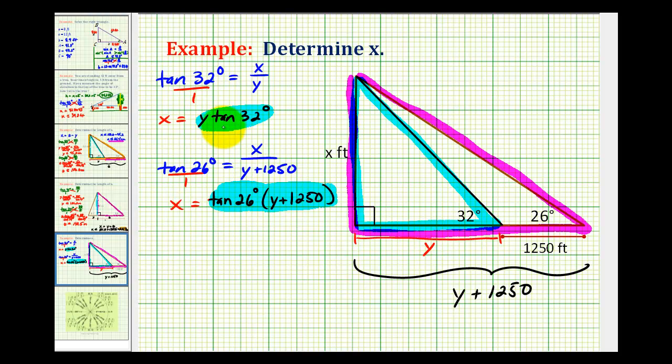So if we perform this substitution, we're going to have .6249y equal to .4877 times the quantity y plus 1,250.